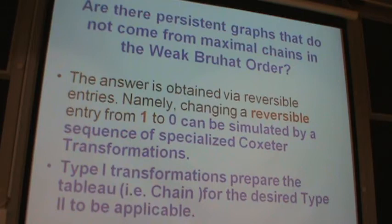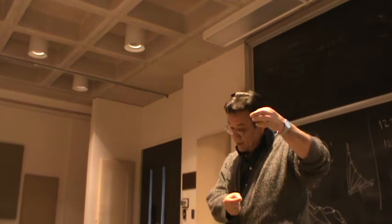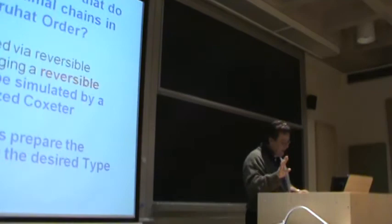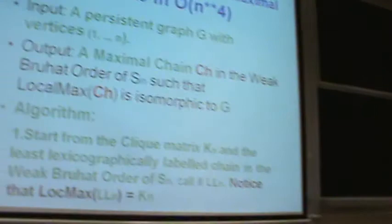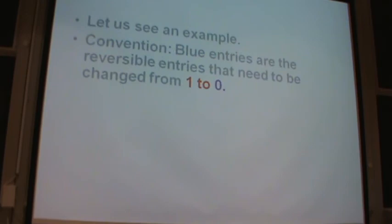There is an algorithm that, given any persistent graph, gives you a maximal chain. The algorithm works by making these reversible entry changes in a very algebraic way. So if you give me your favorite persistent graph, I can tell you: here is the maximal chain — play the local max game and you recover your graph.